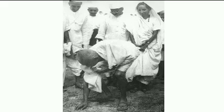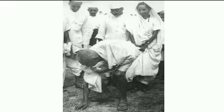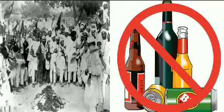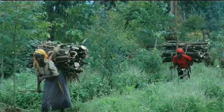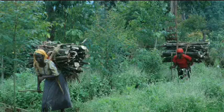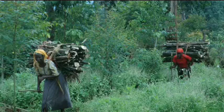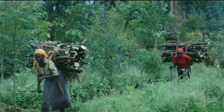The salt march marked the beginning of the Civil Disobedience Movement. People were now asked not only to refuse cooperation with the British, as they had done in 1921-22, but also to break colonial laws. Thousands in different parts of the country broke the salt law, manufactured salt, and demonstrated in front of government salt factories. As the movement spread, foreign cloth was boycotted and liquor shops were picketed. Peasants refused to pay revenue and chaukidari taxes. Village officials resigned, and in many places forest people violated forest laws by going into reserved forests to collect wood and graze cattle. Worried by the developments, the colonial government began arresting the Congress leaders one by one, which led to violent clashes in many places.